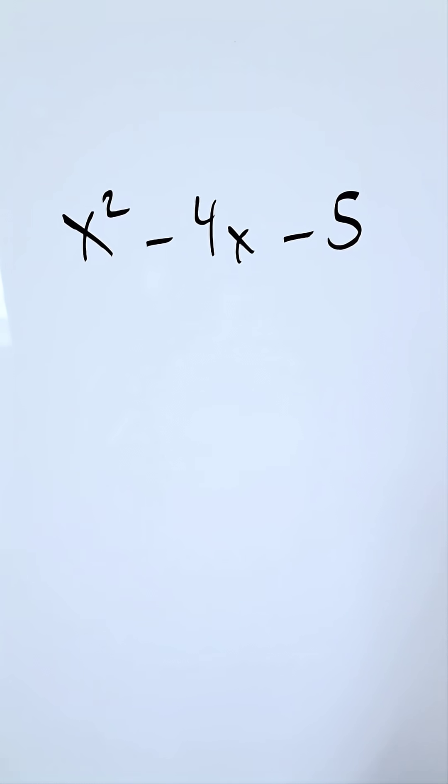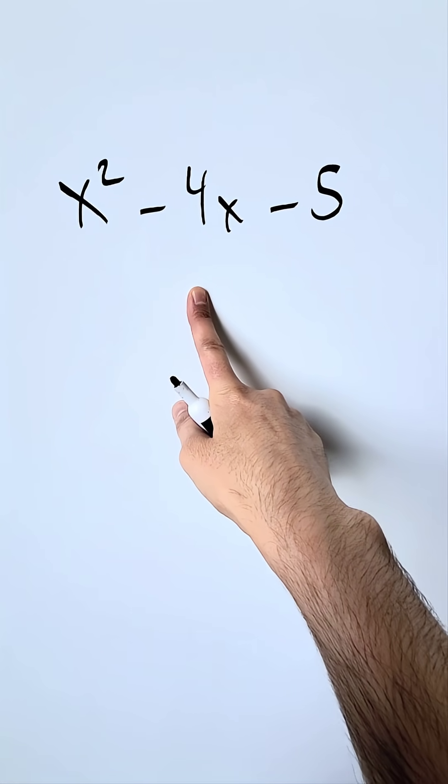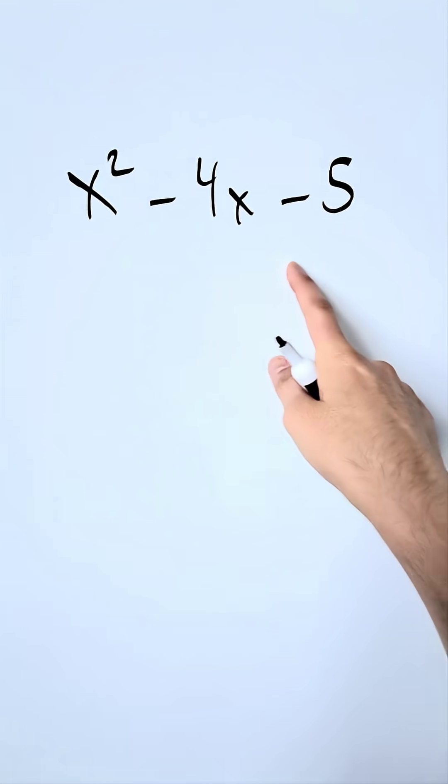We are looking here at a quadratic equation x squared minus 4x minus 5 and I want to graph this. To do that I need a bunch of items. Let's start here with our x-intercept and you can factor this.